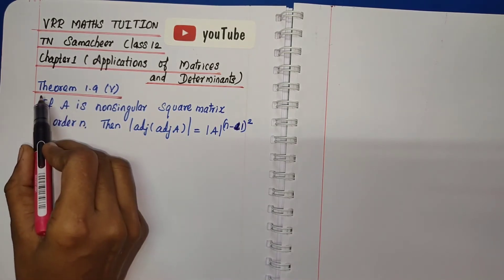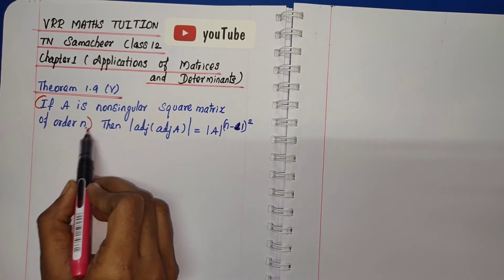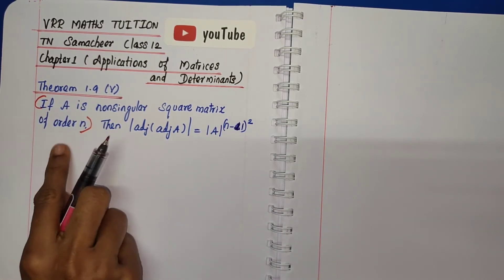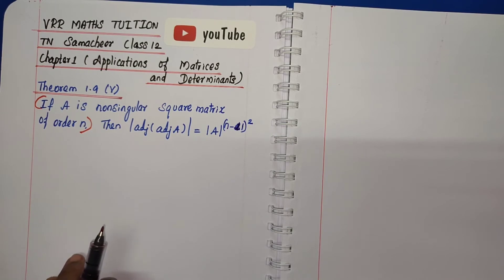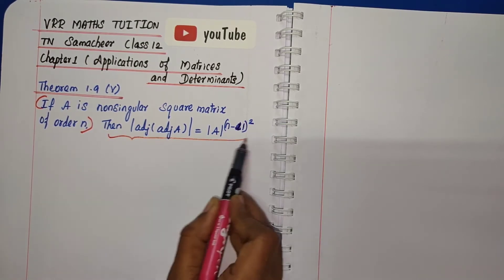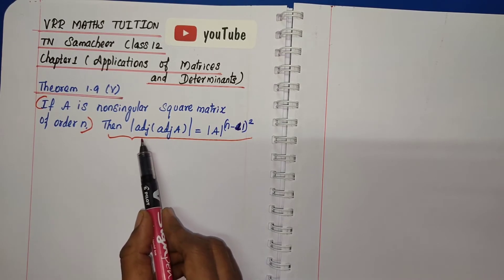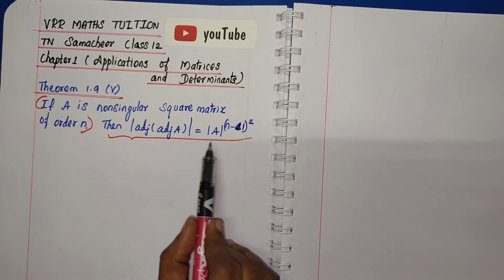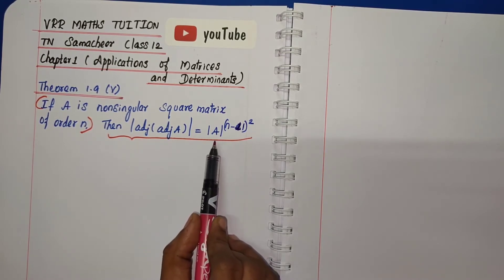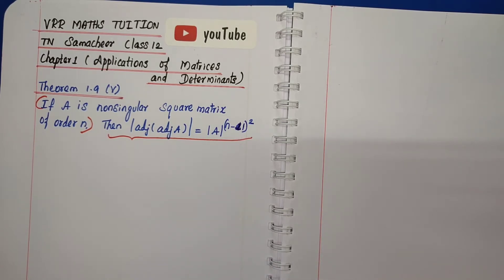Given: A is a non-singular square matrix of order n. We need to prove the result: determinant of adjoint of adjoint A is equal to determinant A power n-1, the whole square.